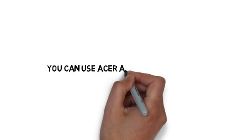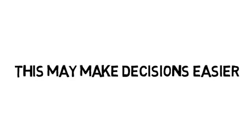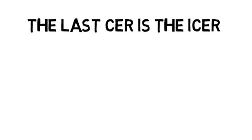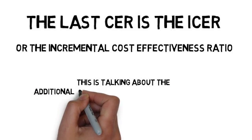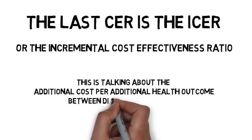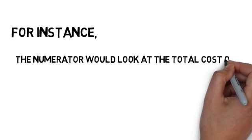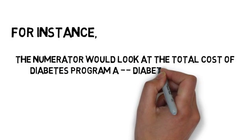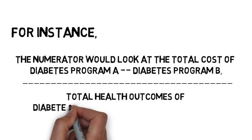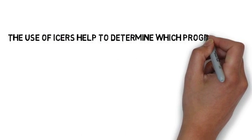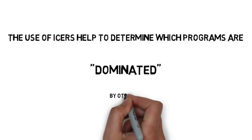You can use ACER and MERCER together, which may make decisions easier. The last CER is the ICER, or the incremental cost-effectiveness ratio. This is the additional cost per additional health outcome between different programs using the same resources. The numerator is the difference between the total cost of diabetes program A and the total cost of diabetes program B, and the denominator is the difference in total health outcomes between program A and program B. The use of ICERs helps to determine which programs are dominated by others. This, in a nutshell, is the breakdown for cost-effective analysis.